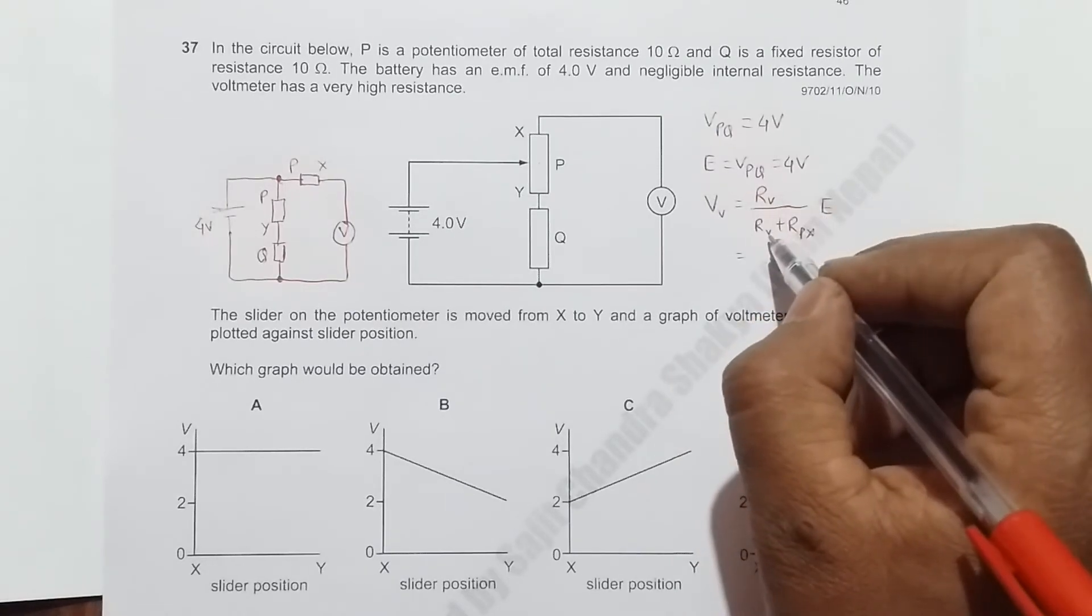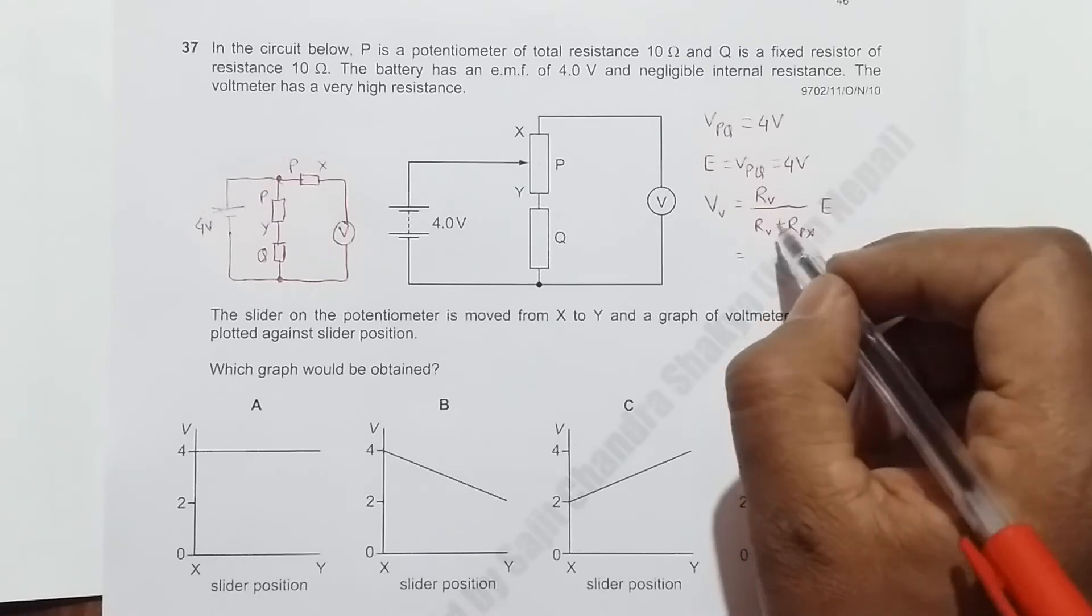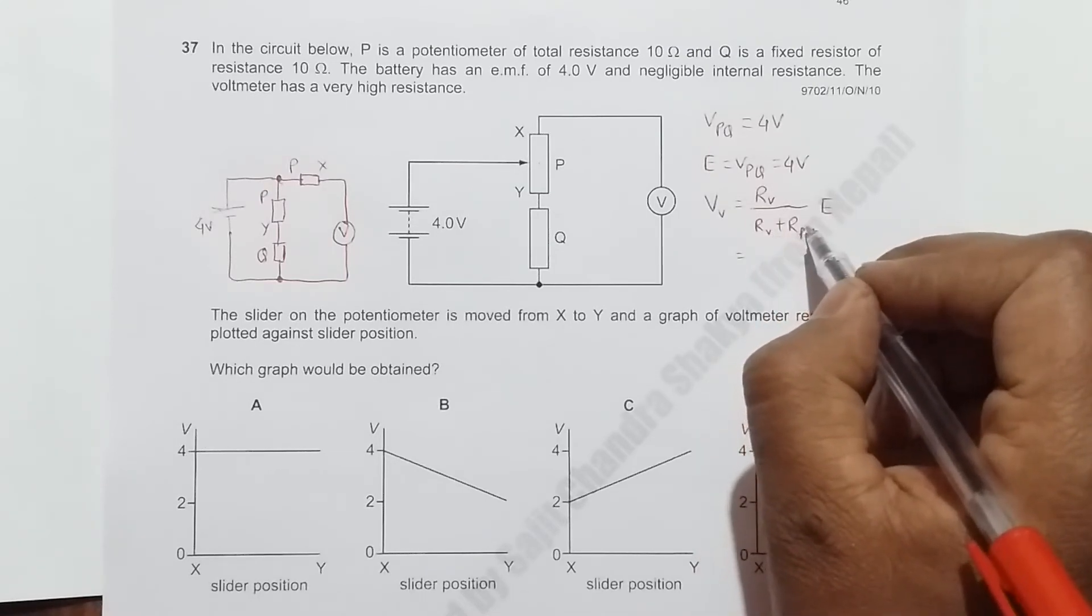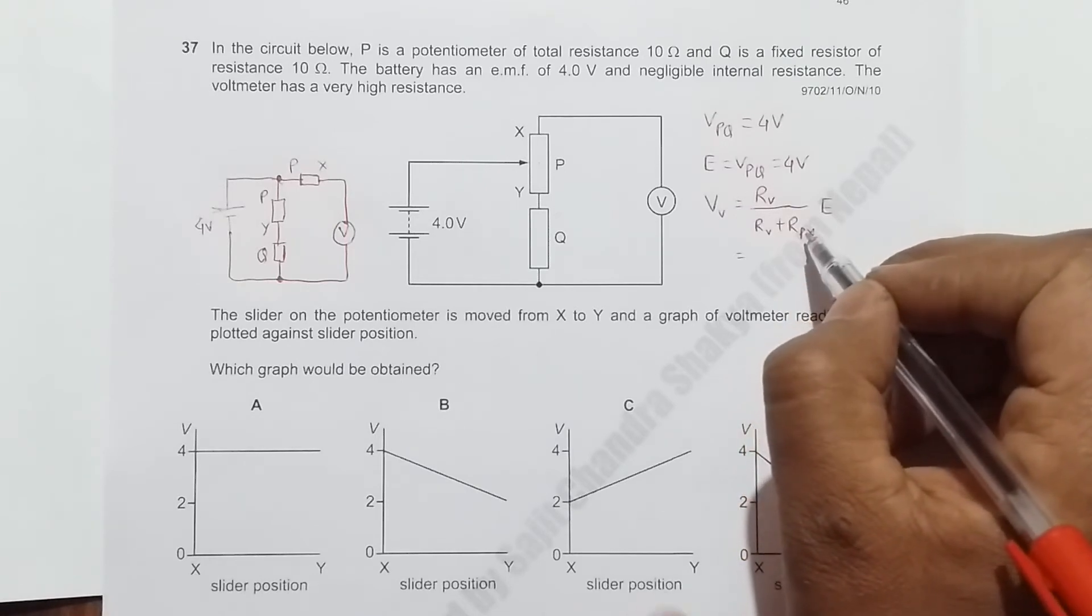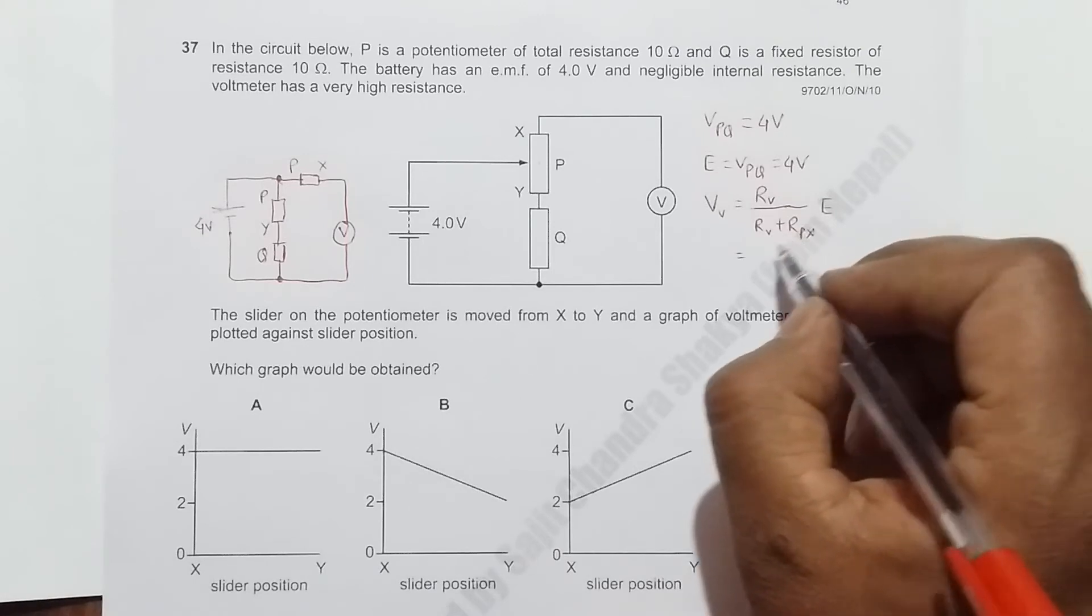Compared to the resistances here, the resistance of R_PX will be almost zero compared to the resistance of R_V. I can assume that R_PX is nearly equal to 0.